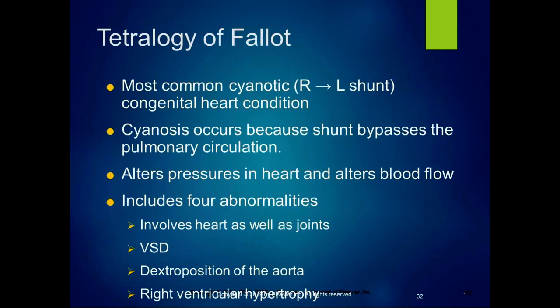The tetralogy of Fallot is the most common cyanotic heart condition. With the ventricular septal defect we had a left-to-right shunt, so it wasn't causing cyanosis. When we have a right-to-left shunt, the less oxygenated blood from the right side bypasses the lungs, so you get cyanosis due to oxygen deprivation — the shunt bypasses the pulmonary circulation and alters pressures and blood flow in the heart. It usually includes four abnormalities — that's why it's called the tetralogy; tetra meaning four.